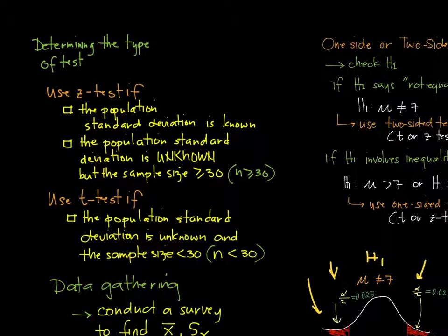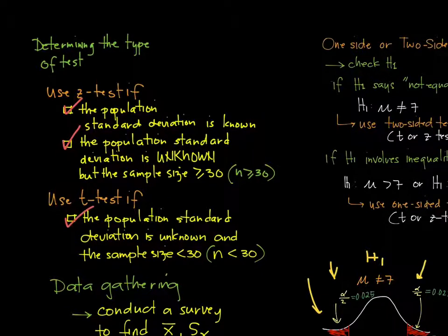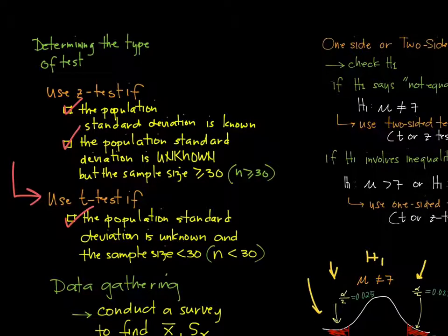Next, we need to understand how to determine the type of test to use. There are two types: the z-test and the t-test. We use the z-value when the population standard deviation is known, or when the population standard deviation is unknown but the sample size is greater than or equal to 30. If the population standard deviation is unknown and the sample size is less than 30, we cannot use the z-value and we use the t-value instead.